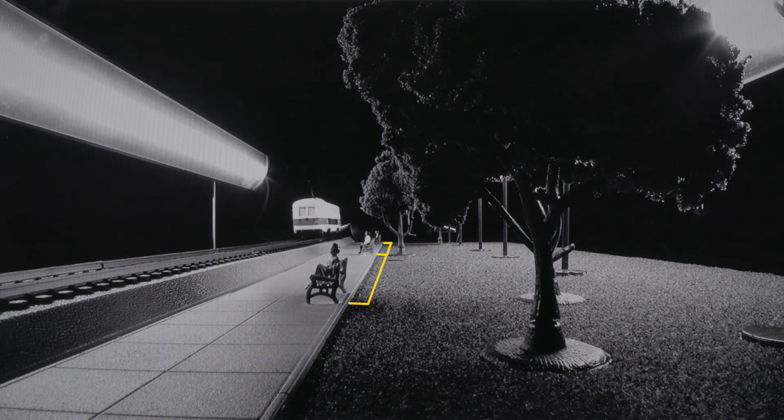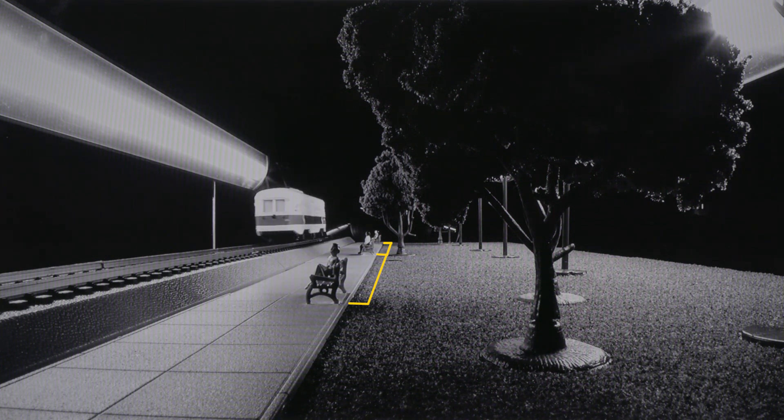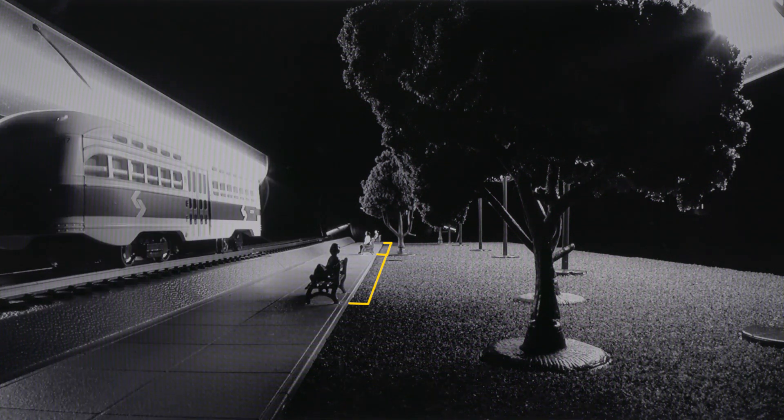While the benches are equidistant from one another, the apparent distance between the first two benches appears much greater than the apparent distance between the last two.